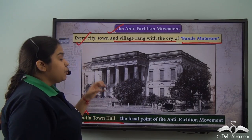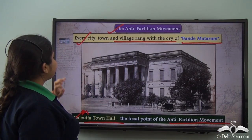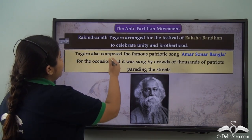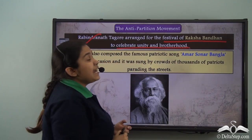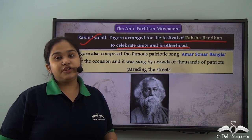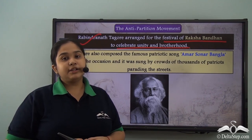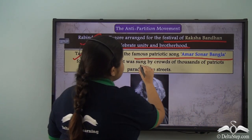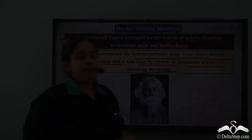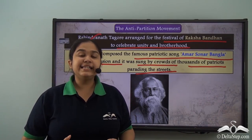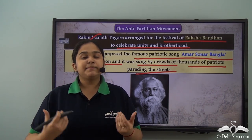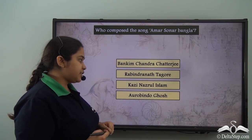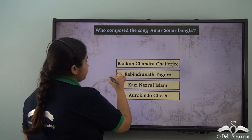The Calcutta Town Hall became the focal point of the anti-partition movement. Rabindranath Tagore arranged a festival of Raksha Bandhan celebrating unity and brotherhood, where Hindus and Muslims tied the Raksha Bandhan thread on each other's wrists. Tagore also composed the famous patriotic song Amar Shonar Bangla for the occasion, which was sung by thousands of patriots parading the streets. The correct answer to who composed the song Amar Shonar Bangla is Rabindranath Tagore.